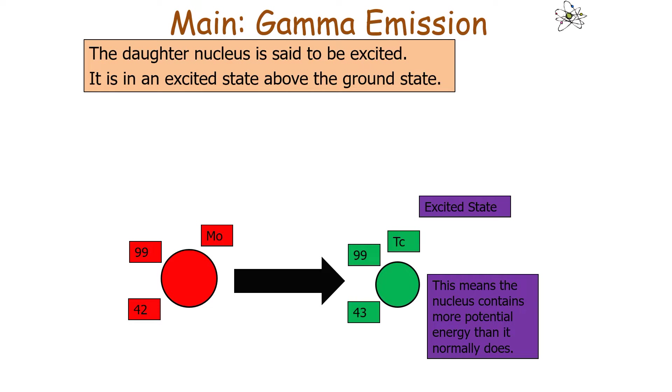A nucleus is in an excited state when it's above the ground state, which is the state that a nucleus of this particular type would have normally. In this example, technetium is excited, meaning the nucleus contains more potential energy than it normally does.